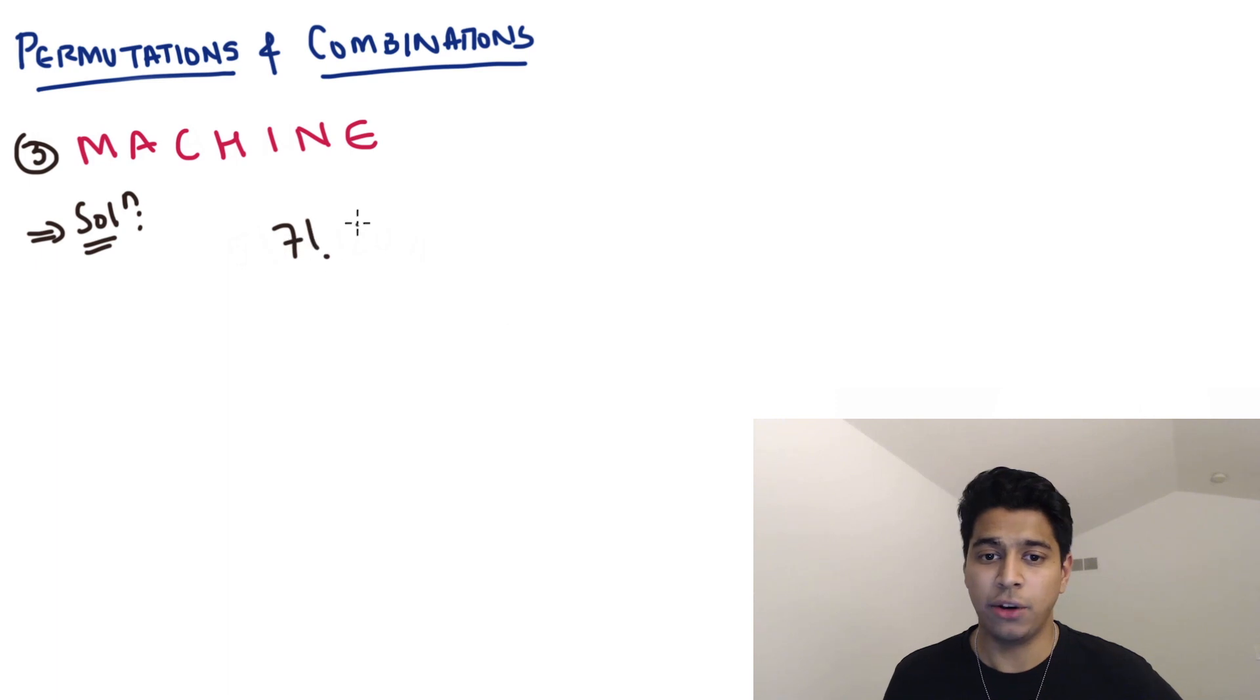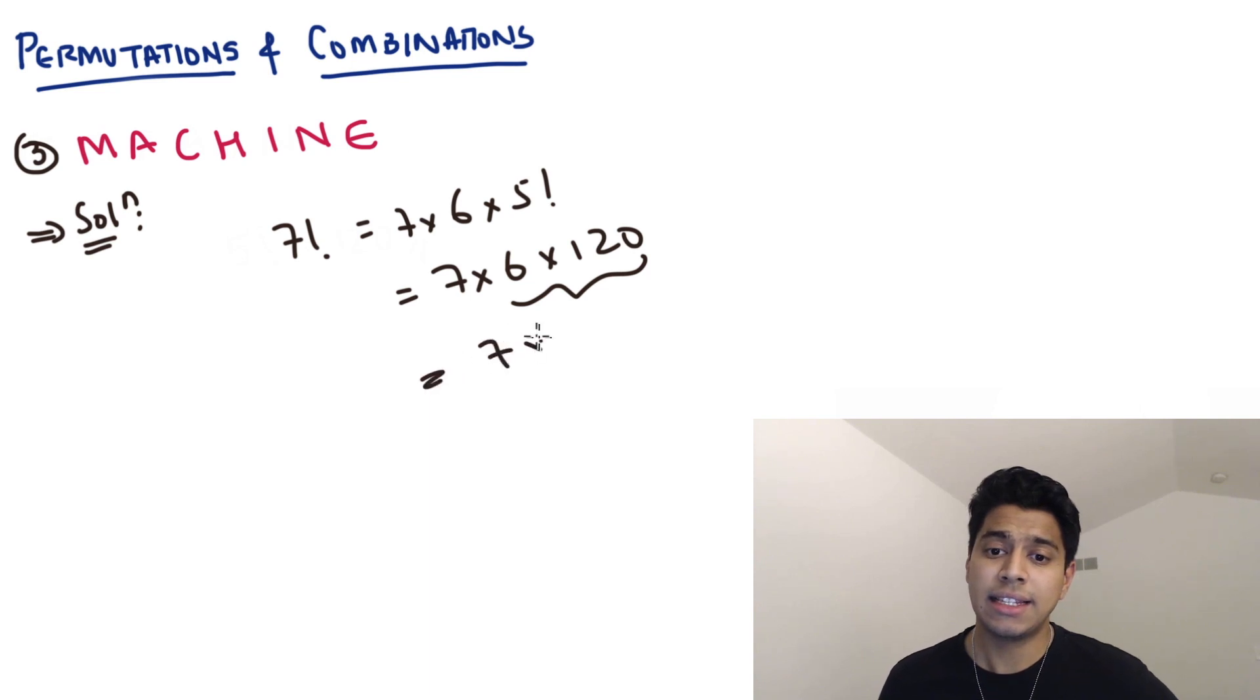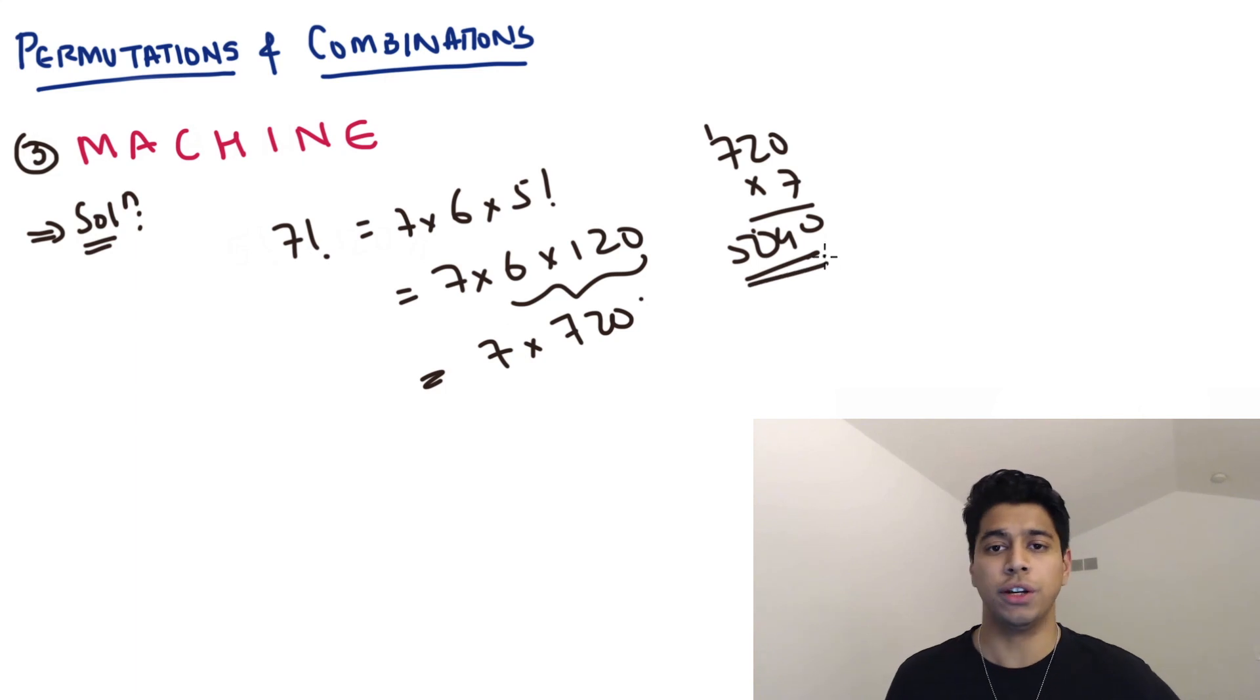So it's just going to be 7 factorial, which is 7 into 6 into 5 factorial, which is 7 into 6 into 120. I know 6 into 120 is 720. And now 720 into 7 is 0, 1, 4, 49, 50. So 5, 0, 4, 0. That's your answer.